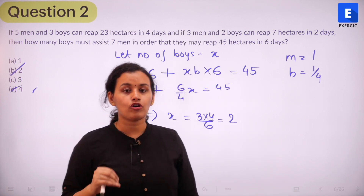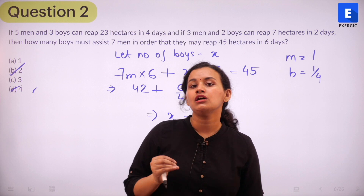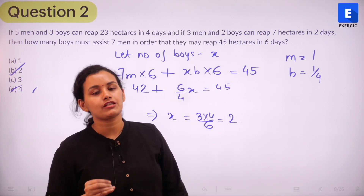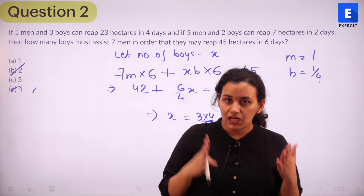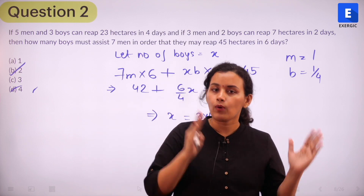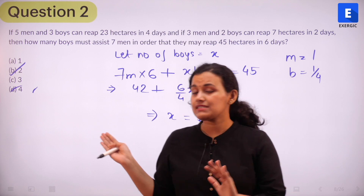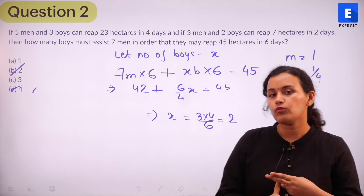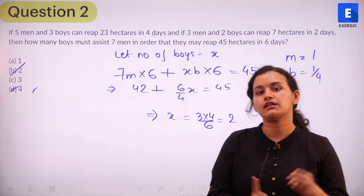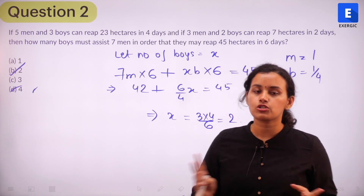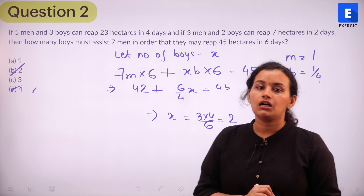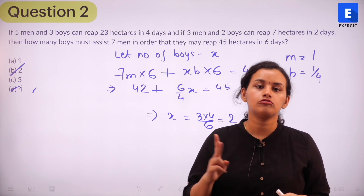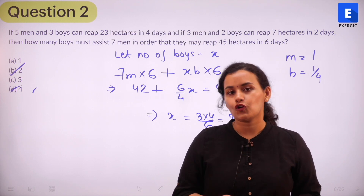To solve questions of this type, your fundamentals must be clear on how we define work in time and work problems. We always start with one man's one day's work, one woman's one day's work, or one boy's one day's work as given. We identify how many men and boys are given, how much work is done, and in how many days — and then arrive at two simultaneous equations with two unknowns to solve the question.